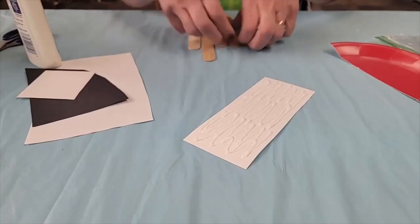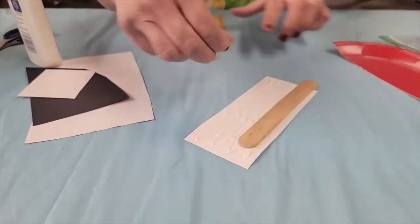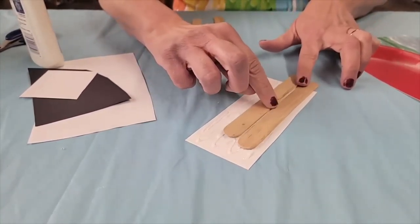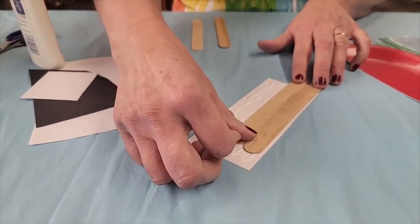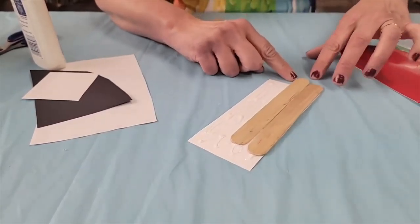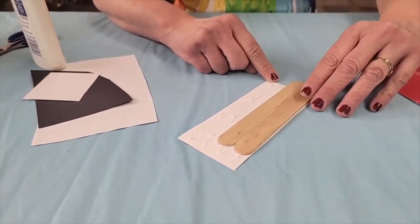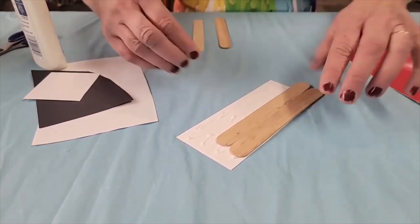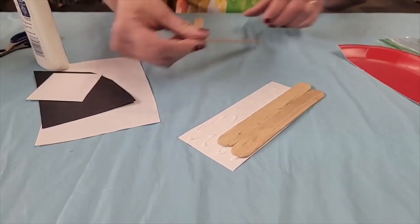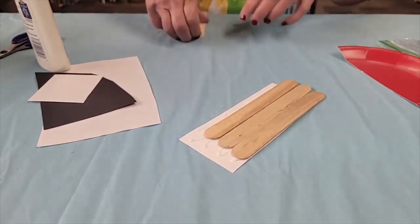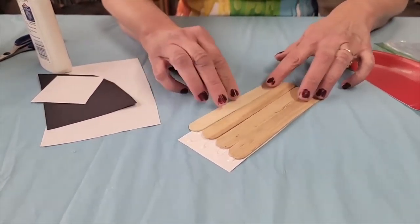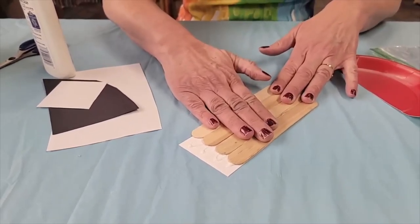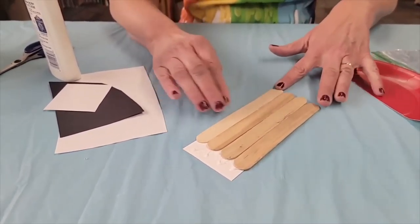We're going to put that glue there and then we're just going to take your craft sticks and lay them down right next to each other, side by side, and you're going to want to have it come off a little bit so that the paper doesn't show underneath the craft sticks or at the bottom there. So you're just going to lay those side by side and that's going to give us the base of our house. Let's press it down so that it sticks really well.